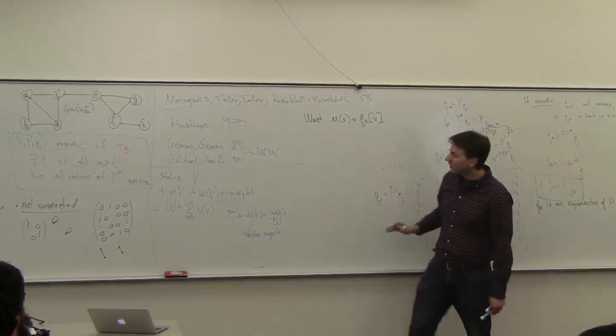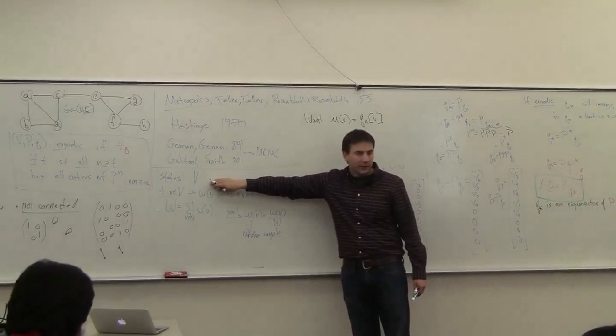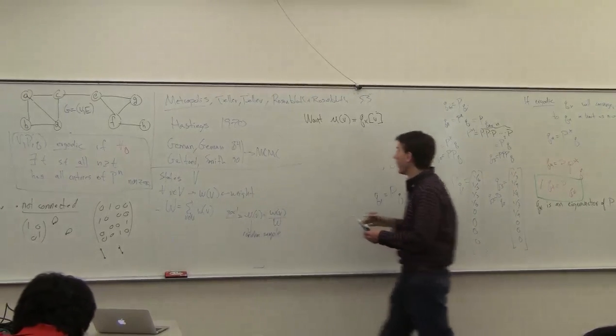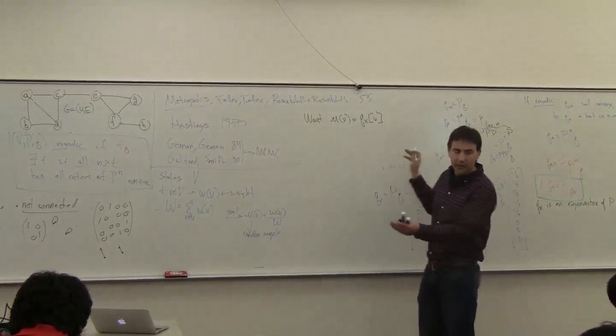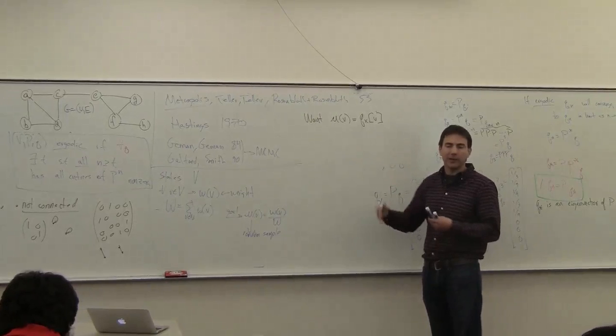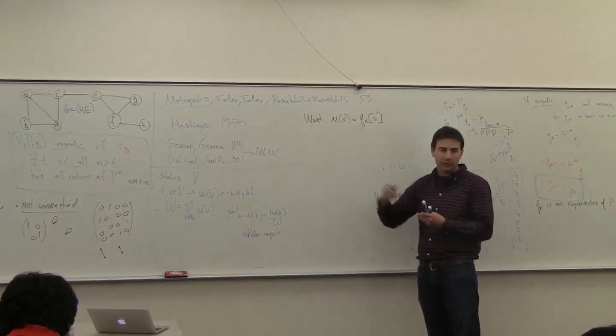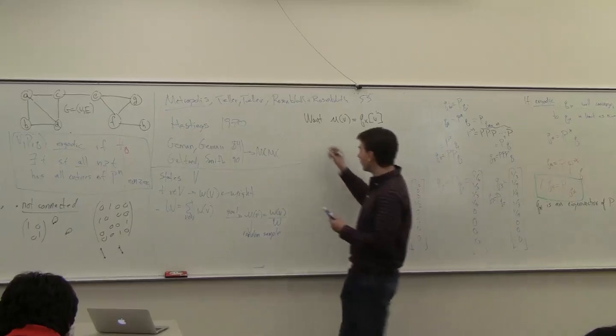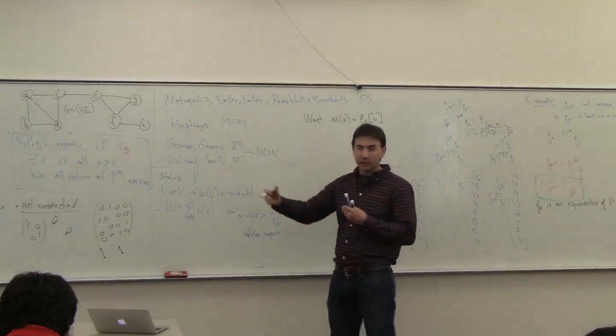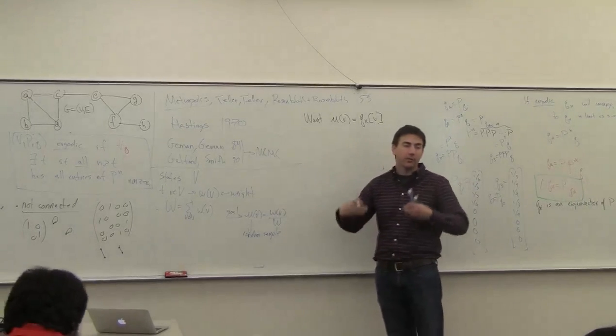And so, again, this state space could be continuous. It could be really large. So I don't want to define this whole matrix which I erased. I want to define something implicitly which just tells me how I do the transformation. So I'm going to define an algorithm, which is my transition matrix. And then I can apply this algorithm over and over.